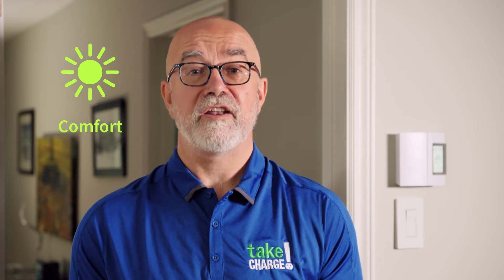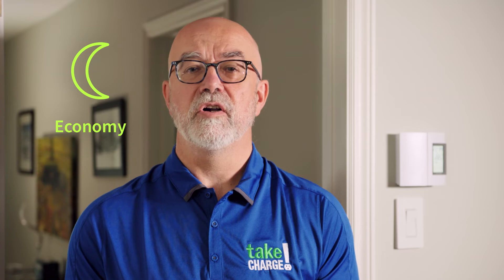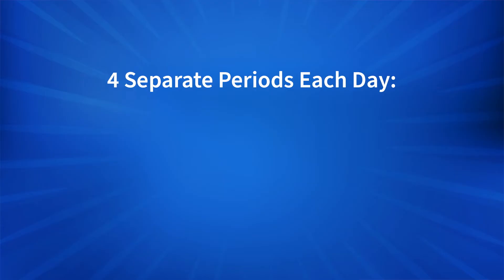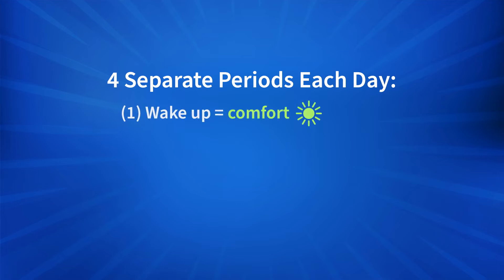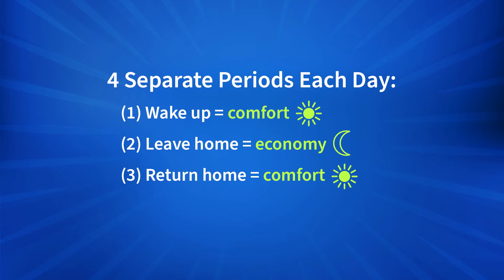When programmed, the thermostat alternates between two temperatures: Comfort, or warm temperature, for when at home; and Economy, or lower temperature, for when asleep or away. Your thermostat can be programmed for four separate periods each day: one, wake up or comfort; two, leave home or economy; three, return home or comfort; four, sleep or economy.